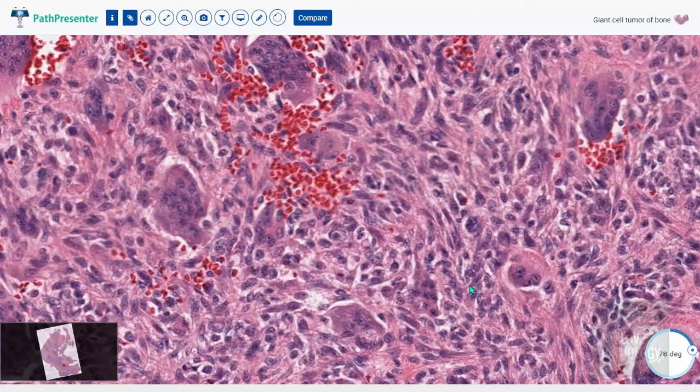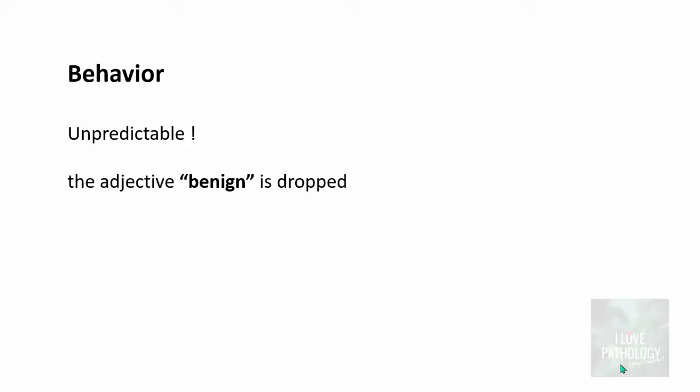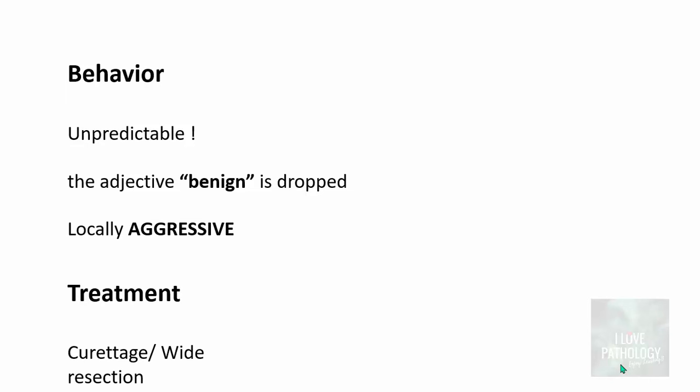Mononuclear cells are neoplastic; multi-nucleated cells are non-neoplastic. What's the behavior of Giant cell tumor? They are highly unpredictable, and that's the reason the adjective 'benign' is dropped — you don't call it benign Giant cell tumor, just Giant cell tumor, because they are locally aggressive tumors. Treatment is usually by curettage or wide resection, but because they are locally aggressive, 15 to 50 percent of Giant cell tumors can recur.